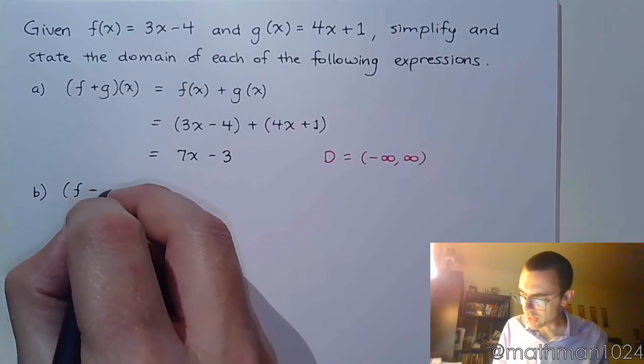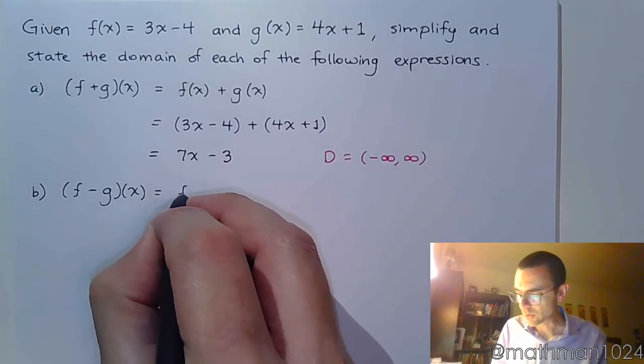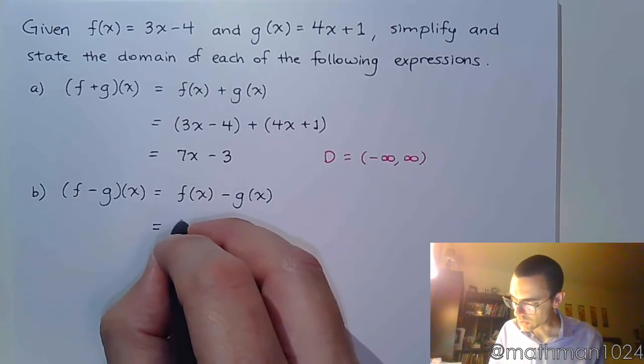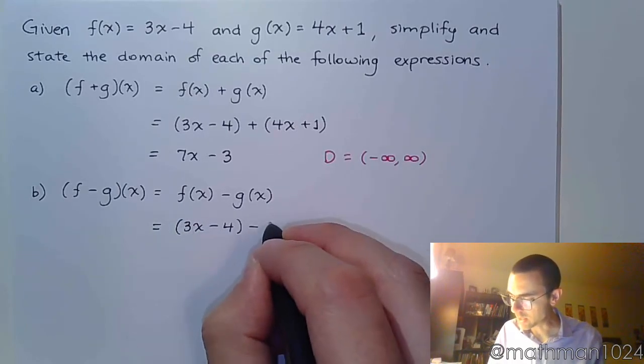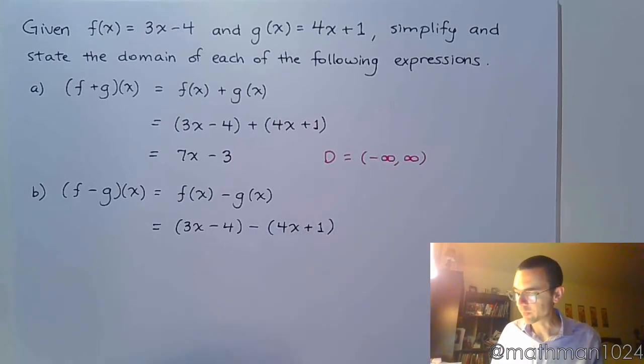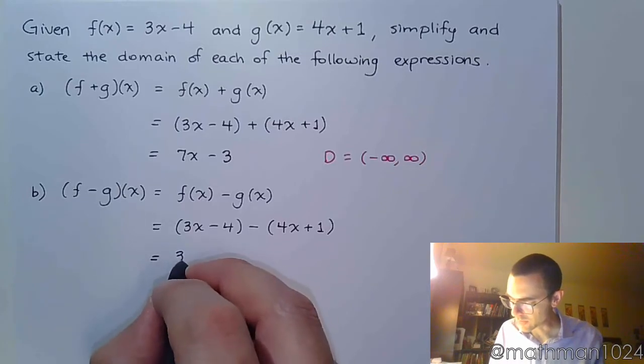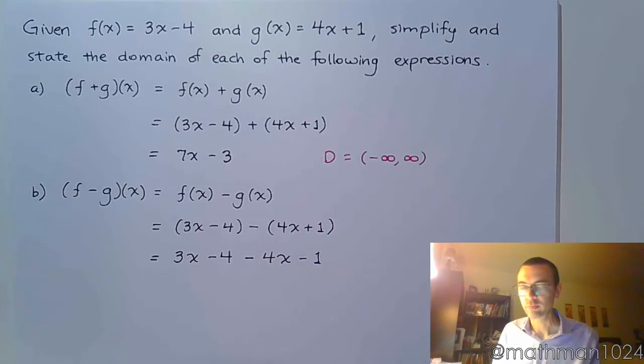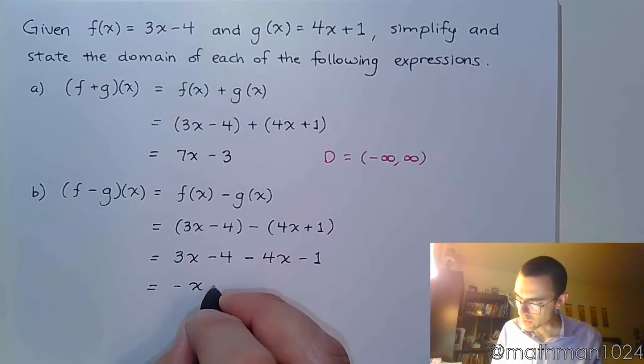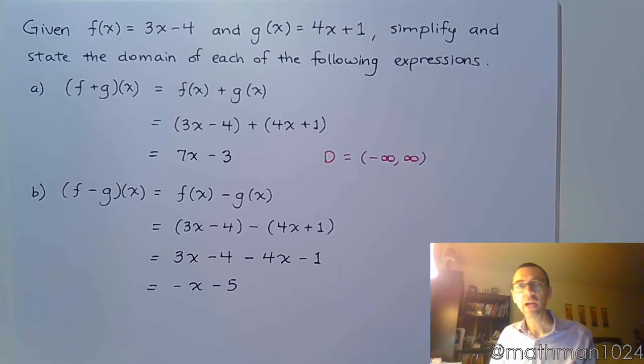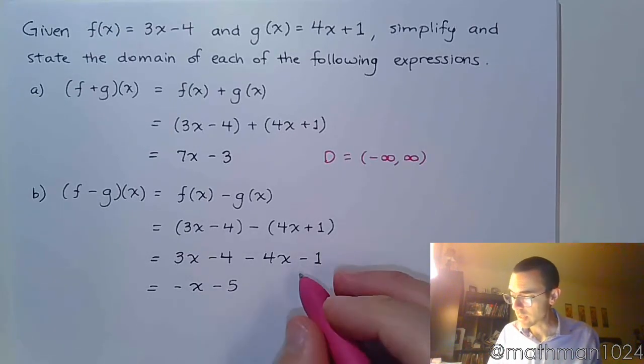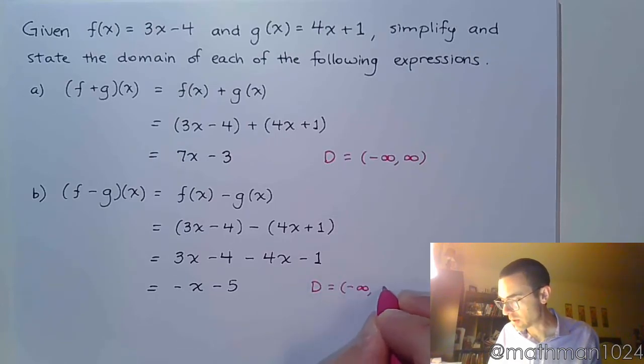Part B would be to do f minus g of x. So that means f of x minus g of x. We're going to do 3x minus 4 minus g of x which is 4x plus 1. We need to do a little bit of house cleaning here. Because we've got that subtraction sign, I don't want to mess up anything, so it becomes negative 4x and minus 1. Now we combine like terms. We get negative x minus 5. Again, let's talk about the domain. There were no restrictions on the original f and g, and this is just another polynomial expression. No fractions, no radicals, no square roots, so my domain should still be all real numbers.